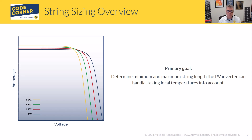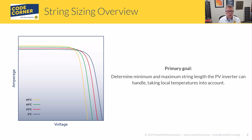Let's first talk about that relationship of PV module voltage to temperature. You see here on this graph — this is an IV curve. There are four IV curves, and what they're representing is the same module or the same string. All that we're changing is the temperature, the temperature that the cells are exposed to or that they're operating at.